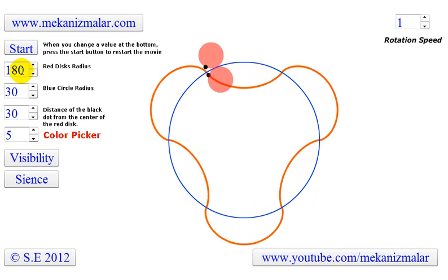For a four-lobe Roots Pump Profile, our values are 200, 25, and 25.